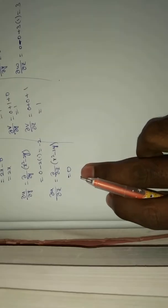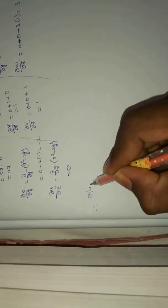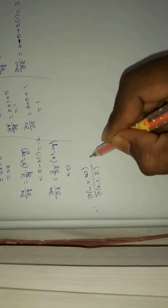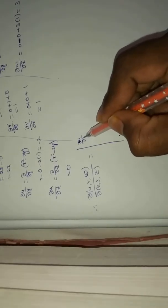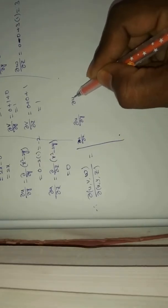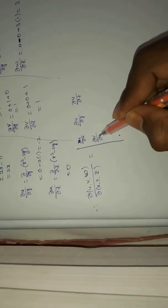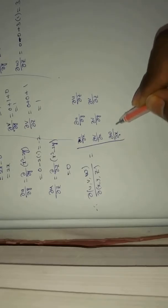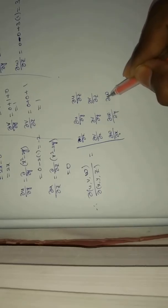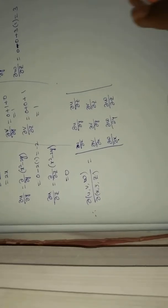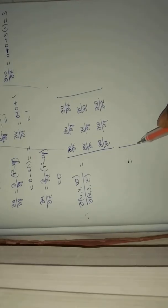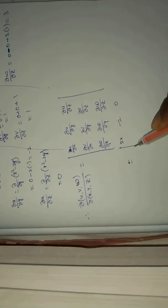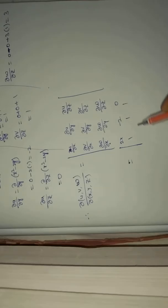Since the question involves three variables, we take a three-by-three determinant. The Jacobian matrix is: first row ∂u/∂x, ∂u/∂y, ∂u/∂z; second row ∂v/∂x, ∂v/∂y, ∂v/∂z; third row ∂w/∂x, ∂w/∂y, ∂w/∂z. Substituting values, the determinant is: | 2x, -2, 0 | 1, 1, 1 | 1, -2, 3 |.